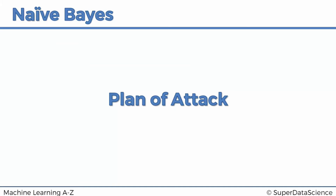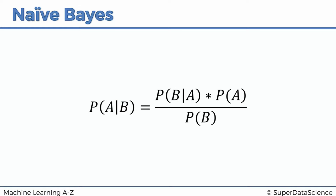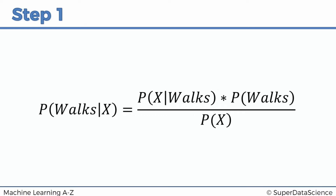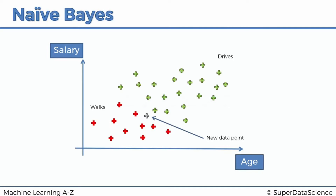We need a plan of attack. It's going to be a complex approach, but we'll break it down into steps so it's easy to understand. We're going to take the Bayes theorem and apply it twice. First, we'll find the probability that this person walks given their features X. Here X represents the features of that data point. Our new data point has a certain age — let's say 25 years old — and a salary of $30,000 per year. Those are the features of this observation. Right now we're only working with two variables, age and salary, for simplicity so we can visualize things.